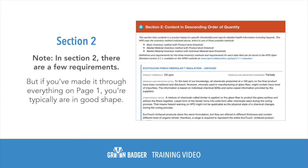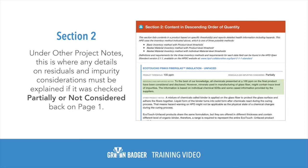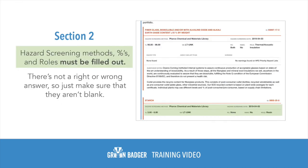In section 2, there are a few requirements, but if you've made it through everything on page 1, you're typically in pretty good shape. Under other project notes, this is where any details on residuals and impurity considerations must be explained if "partially" or "not considered" was checked on page 1. Finally, the hazard screening methods, the percent compositions of the materials, and the roles must be filled out — but there's not a right or wrong answer, so just make sure that they aren't blank.